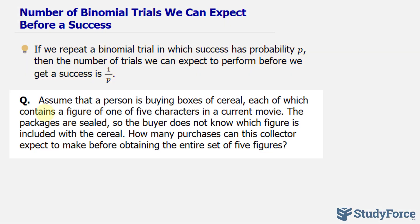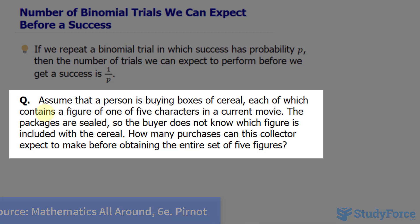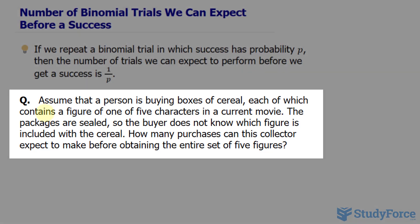With that said, the question reads: assume that a person is buying boxes of cereal, each of which contains a figure of one of five characters in a current movie. The packages are sealed, so the buyer doesn't know which figure is included with the cereal. How many purchases can this collector expect to make before obtaining an entire set of five figures?